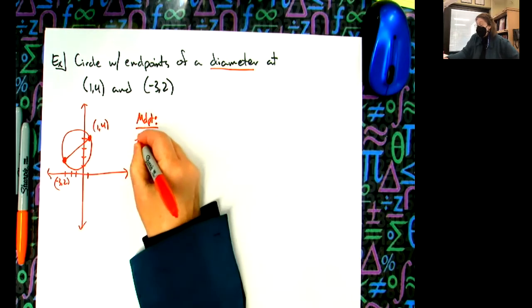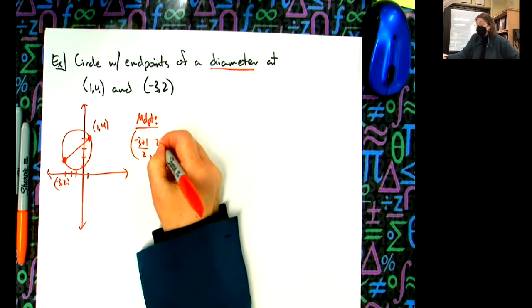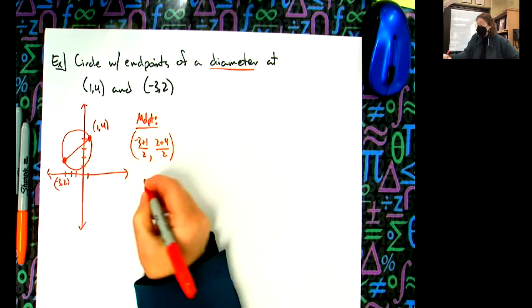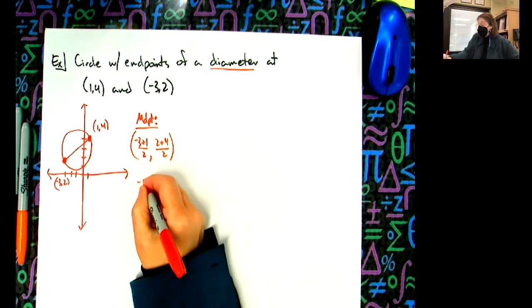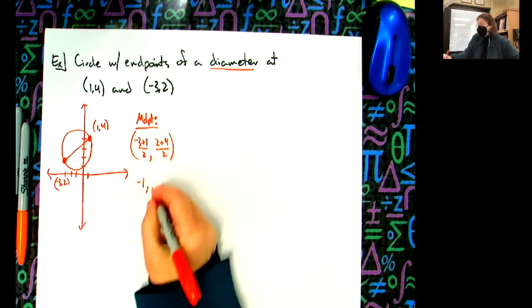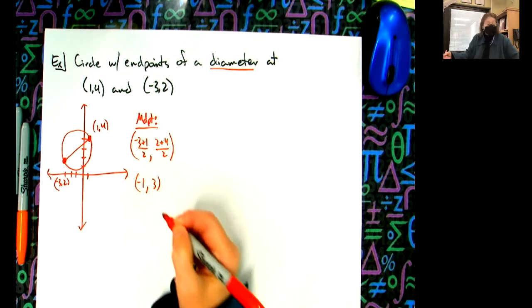So midpoint formula: (-3+1)/2, (2+4)/2. Don't let me make a mistake. So -2/2, 6/2... that's -1, 3. So (-1,3).